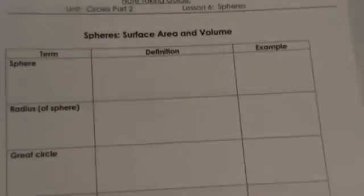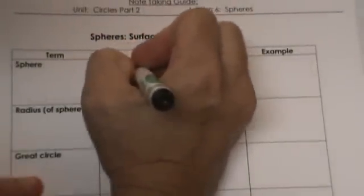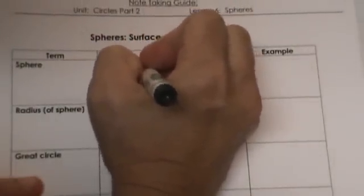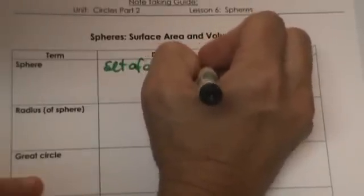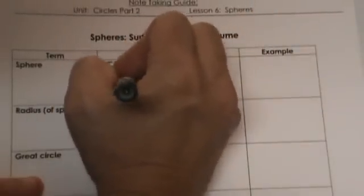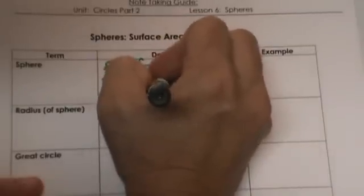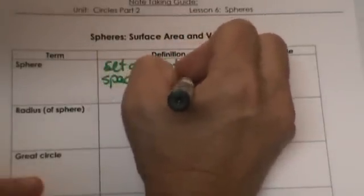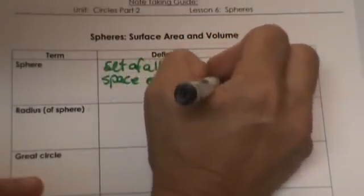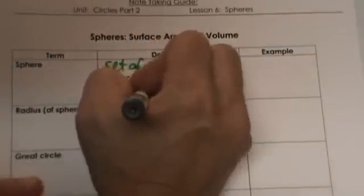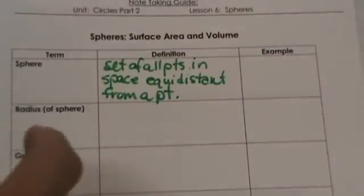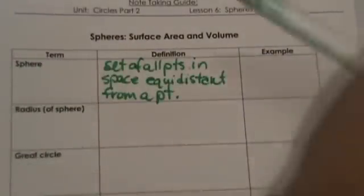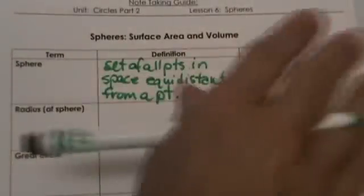What is a sphere? A sphere is the set of all points in space equidistant from a point. It's very similar to a circle. When you're talking about a circle, you're talking about all points equidistant from a point, but it's in a flat plane.